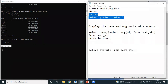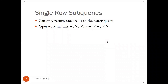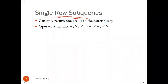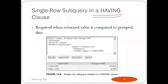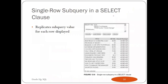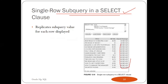So we learned single row subquery three ways: using WHERE — filter rows with the inner query result; using HAVING — filter grouped results; or using SELECT — embed the subquery as a field. In all cases, the inner query returns only a single row result to the outer query.